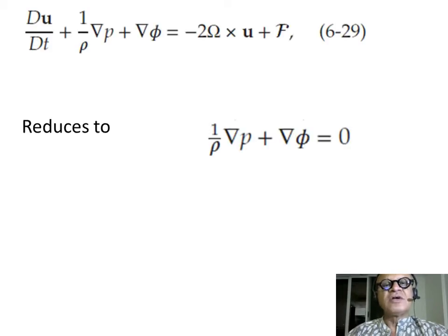What is grad phi in this case? Going back to this equation, we reduced, so u is zero, F is zero, and omega cross u is zero because there is no Coriolis—it's a solid body rotation.